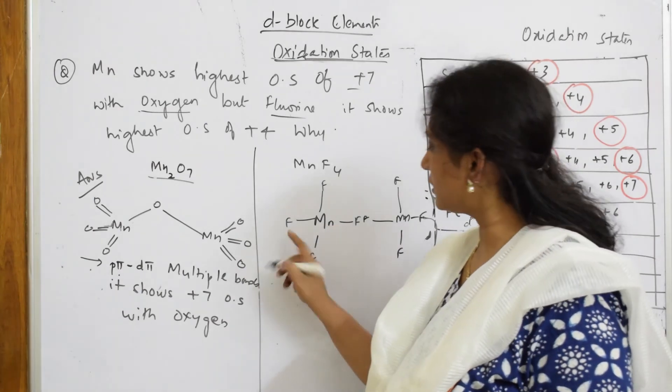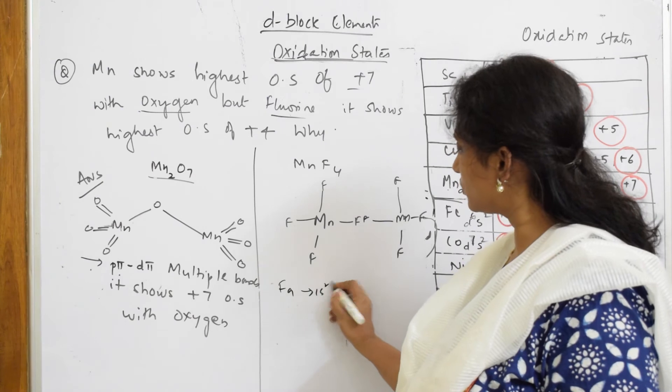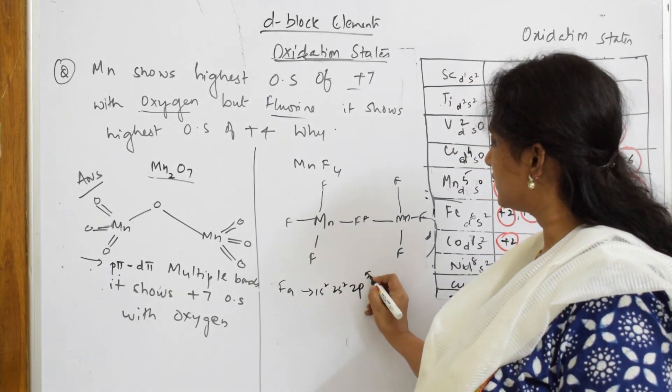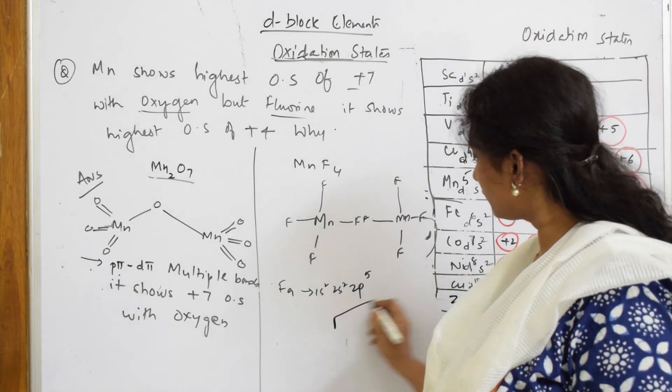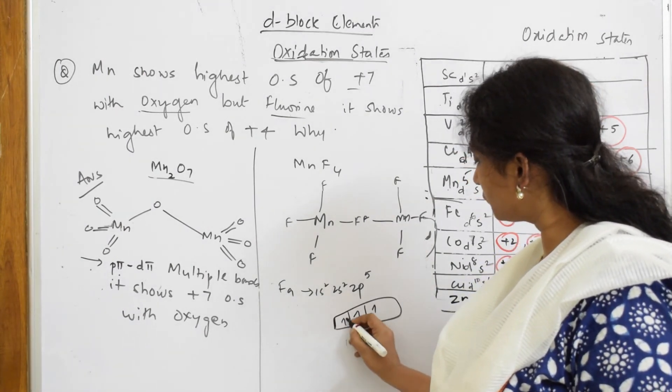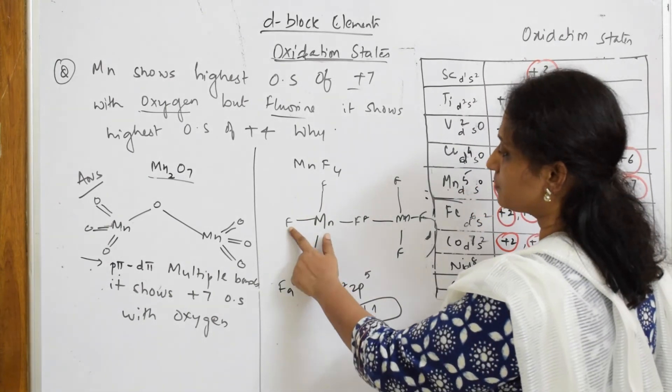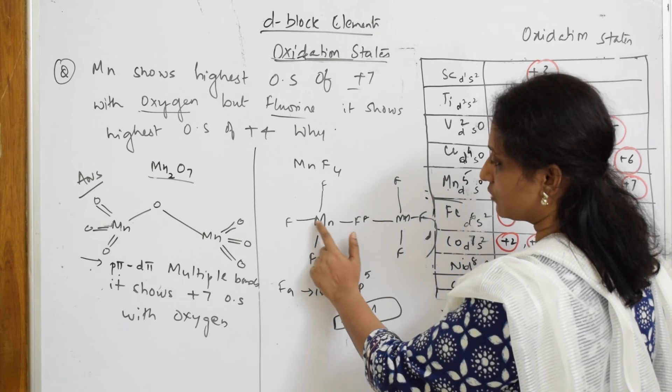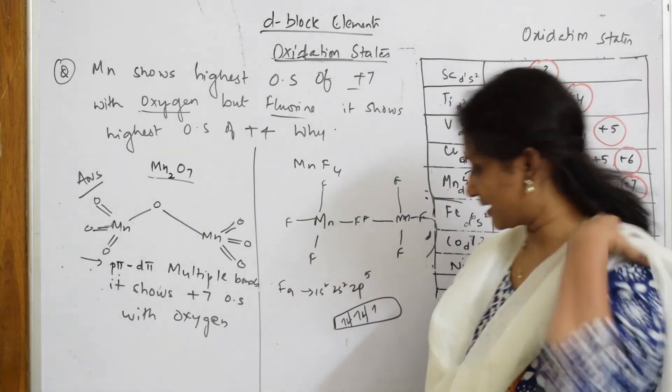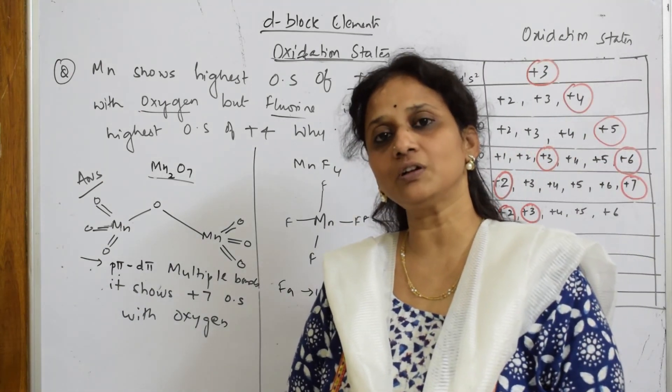What are you observing when we see fluorine? Fluorine atomic number nine: 1s2, 2s2, 2p5 - one, two, three, four, and five electrons in 2p. This one electron is used in sharing to form a bond with manganese. One more fluorine with manganese, one more. Do you have any availability of 2p orbital here?